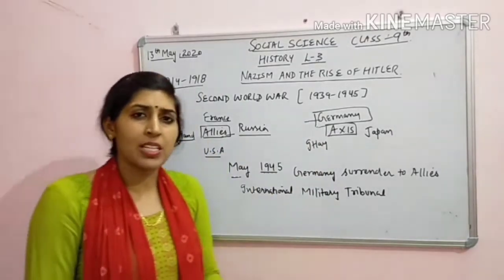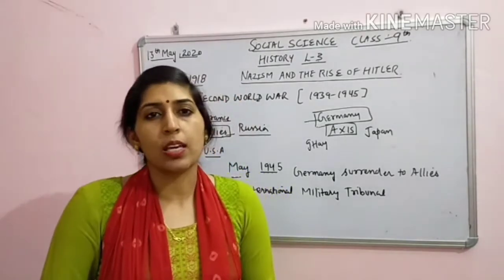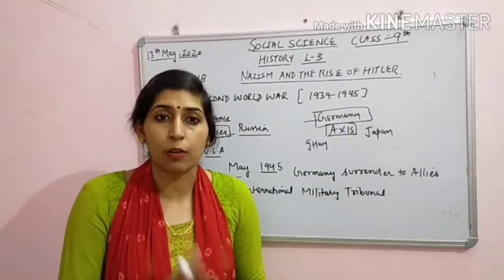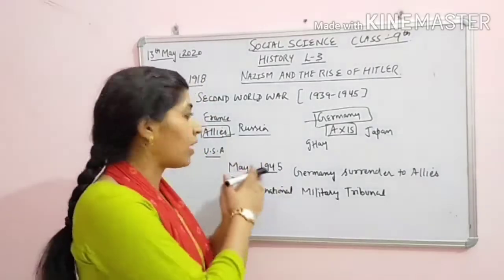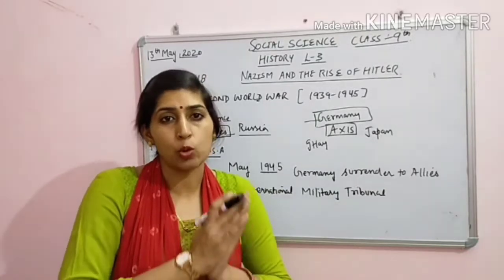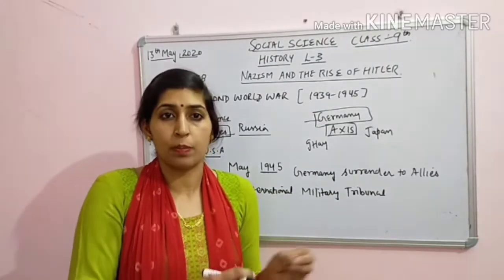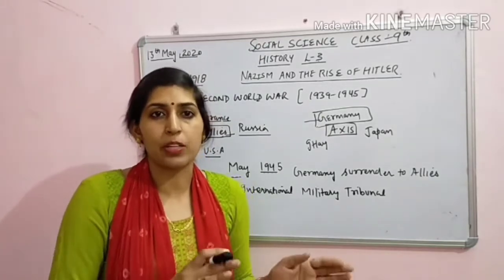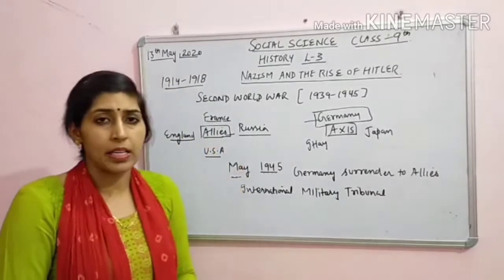Toh jo chapter ka starting hai, usme ek Hamlet naam ka bachcha hai jiske parents aapas mein baat karte hain. Uske father supporter the Hitler ke, woh khud ek Nazi the. Ab woh ye baat kar raha hai ki allied group wale hame chhodenge nahi, hame woh maarenge. Isse pehle hame khud ko maar lete hain. Ya phir aap khane mein kuch aisa mila do ki hame sab pehle hi mar jayein, isse pehle ki hame punishment dhe allied group.